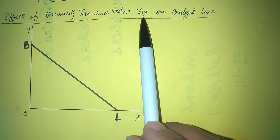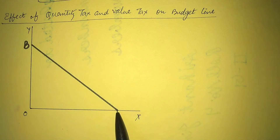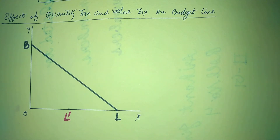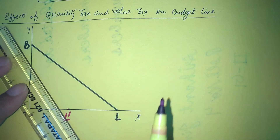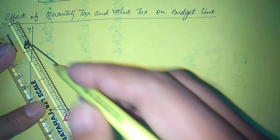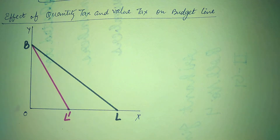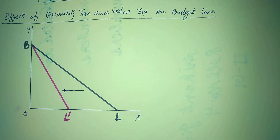Now suppose the government imposes a value tax. If we look at the price of X, the price of X will rise. The budget line will shift — BL will shift to BL dash. This is known as a clockwise shift. This is the effect of quantity tax and value tax on the budget line.